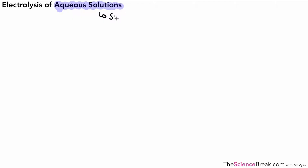If you haven't seen the electrolysis video previous to this, I would go and take a look at it. But if you have, we can carry on. What we're going to do is look at the electrolysis of aqueous solutions. We've talked about that before, but let's recap: what's an aqueous solution? If we have something dissolved in water, that's what we have — an aqueous solution.